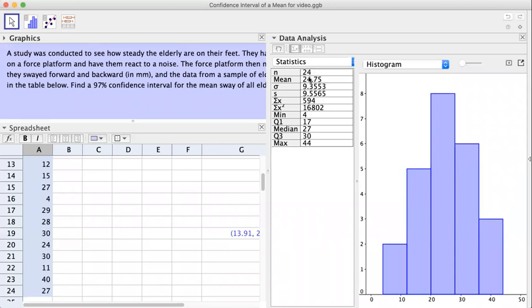The mean they calculated for you is 24.75. The sigma right here is the population standard deviation, but we don't use that. We need the sample standard deviation, which they calculate for you right here. The sigma X, sigma X squared, all this, we don't need it for this example.